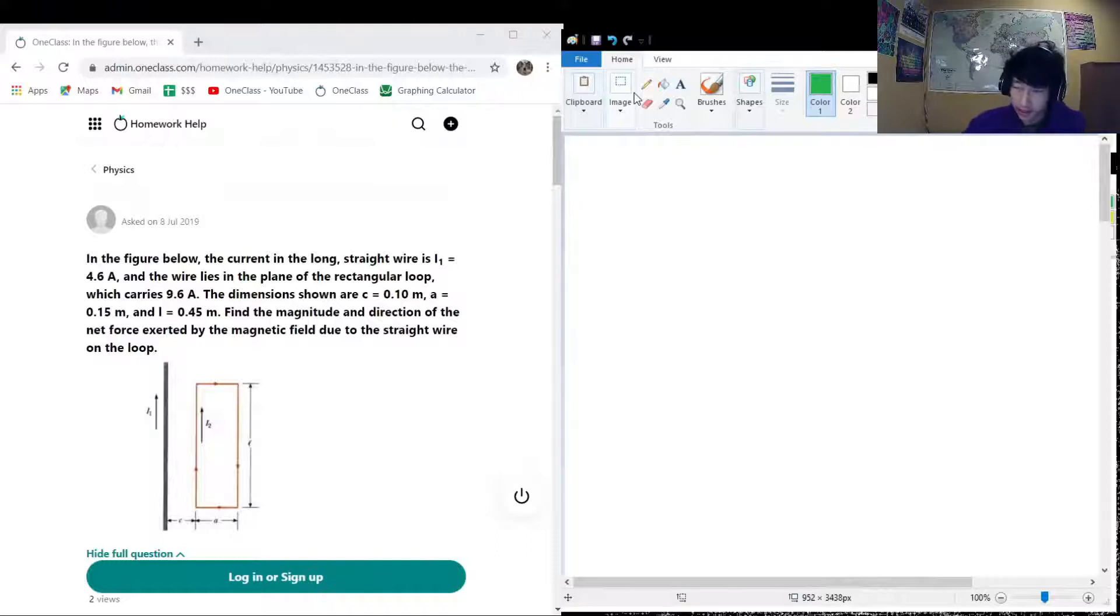The next question we have on the menu today is asking us: along in this figure below we got a long straight wire, the black one on the left that has a current 4.6 amps going upwards through it, and right beside it we have a rectangular loop which carries 9.6 amps going along the rectangle in a rectangular fashion. We have the sizes of the rectangle and we want to find the magnitude and direction of the net force exerted on the loop as a result of the magnetic field interaction with the two wires together.